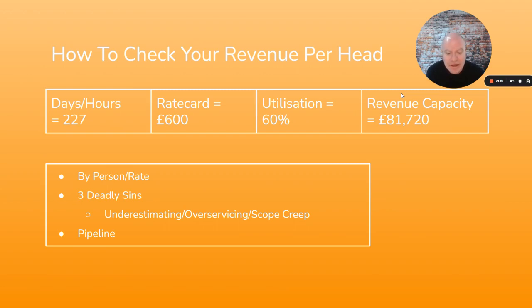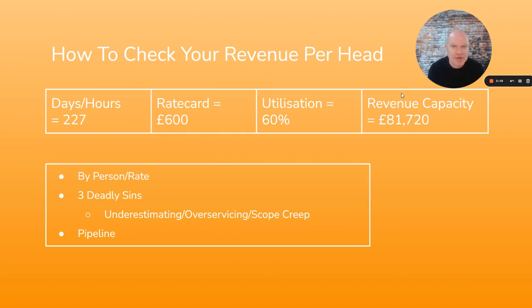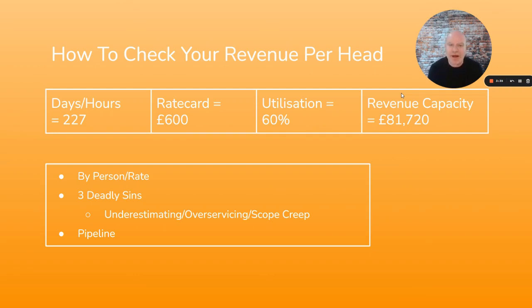The three deadly sins are underestimating, over-servicing, and scope creep. That utilization figure is based on working on client business three days out of five and charging for three days out of five. These three deadly sins will have you working three days out of five — possibly more — but only charging for two, because you haven't estimated enough, you've over-serviced and worked more hours than you can charge for, or there's been scope creep where extra work was added but not charged for.